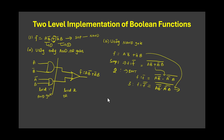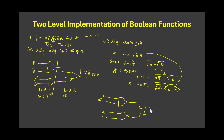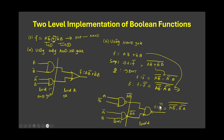The first NAND gate takes inputs A and B̄, implementing (AB̄)̄. The second NAND gate takes inputs Ā and B, implementing (ĀB)̄. Both outputs feed into a third NAND gate, implementing ((AB̄)̄ · (ĀB)̄)̄, which equals F̄̄ = F. Level 1 is the first two NAND gates, and Level 2 is the final NAND gate.